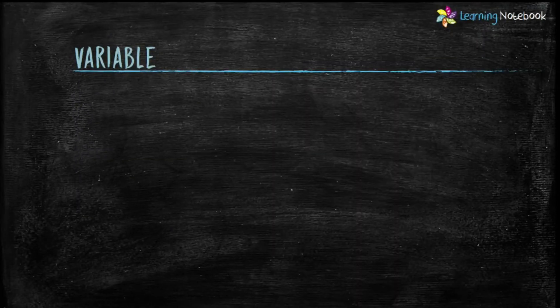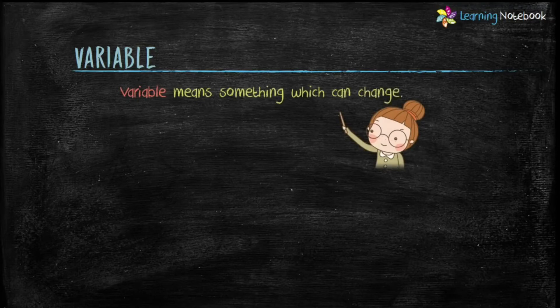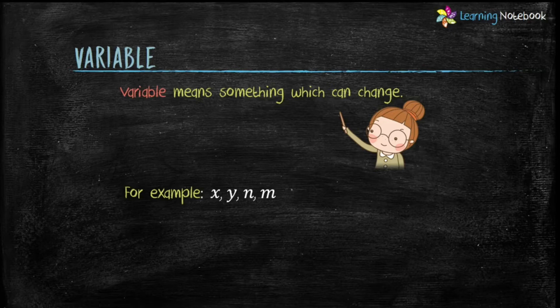The next term is variable. Variable means something which can change. For example, x, y, n, m. All these are variables because their values can change.